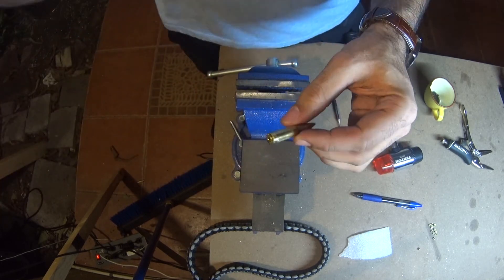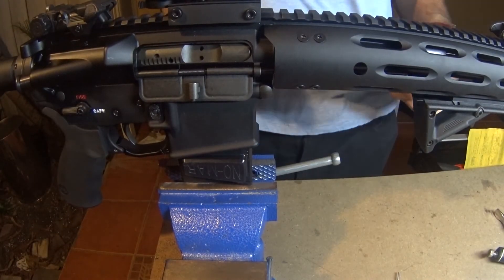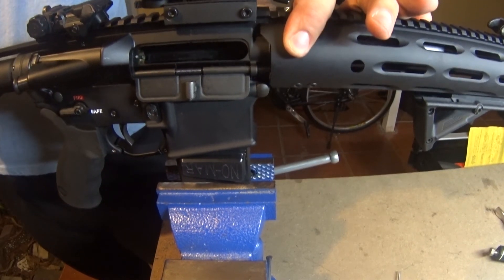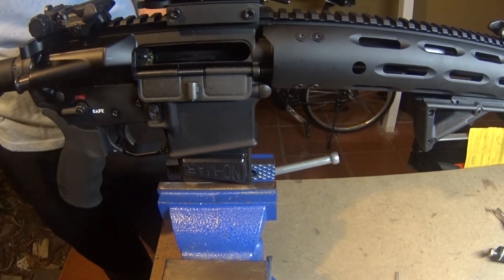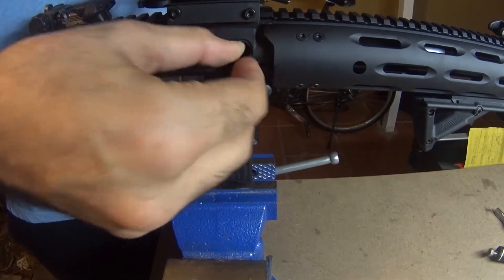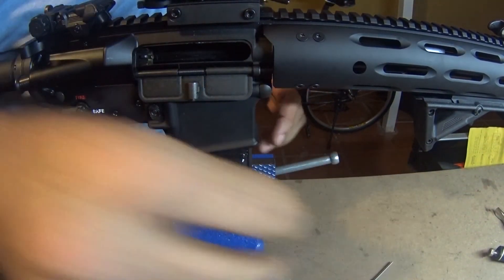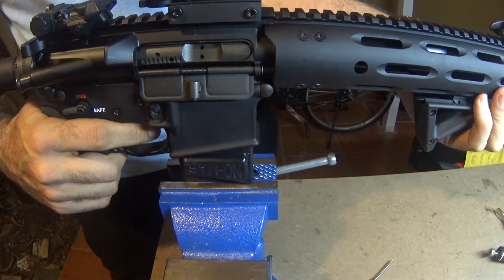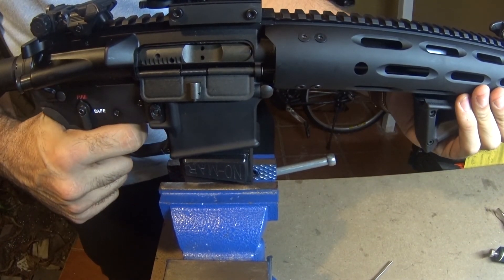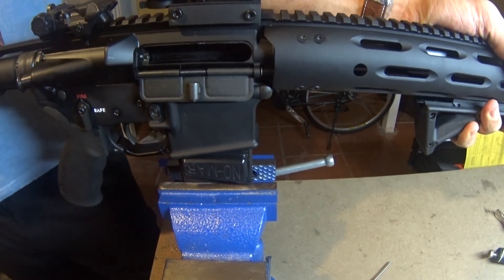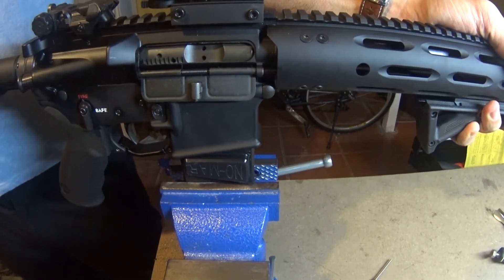So let's go ahead and try it out. So here I got the AR. This is a basic 300 blackout rifle. Let's go ahead and load the round. There you go. Cycled it. We're all set.